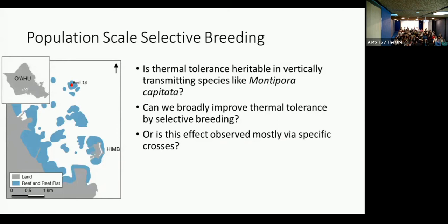The questions we wanted to ask for this study are: is thermal tolerance heritable at a population scale in a vertically transmitting species like Montipora capitata? As Josh mentioned, the species releases egg sperm bundles that are provisioned with symbionts. And like Beth mentioned,